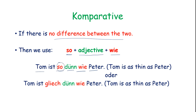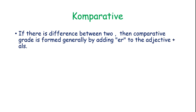No change: So, adjective — no change. Tom ist genauso wie Peter. As adjective as it is — gleich wie. If there is no difference, we use: So, adjective, wie. Let's see further. If there is a difference between two, we add -er with the adjective, plus als.